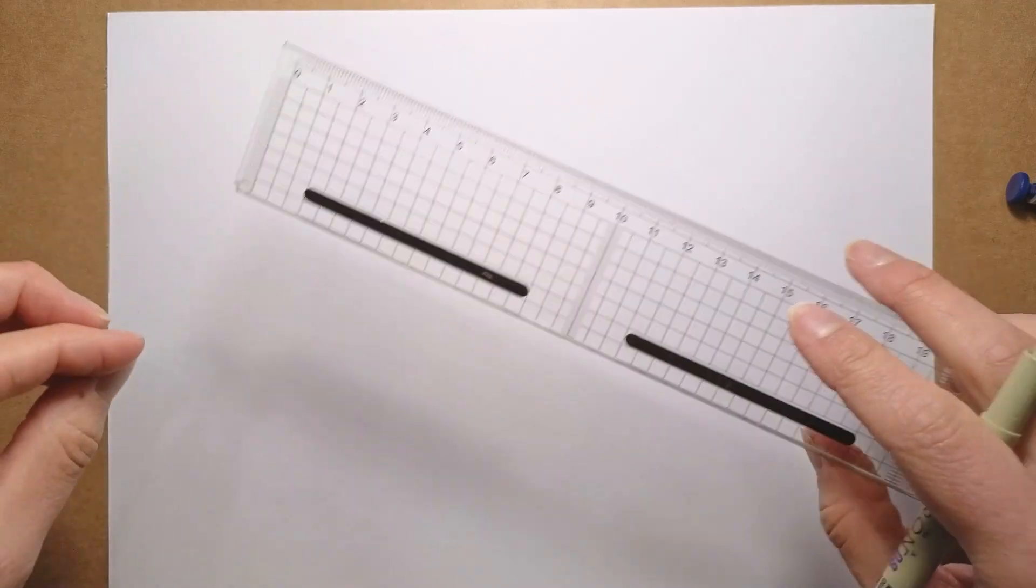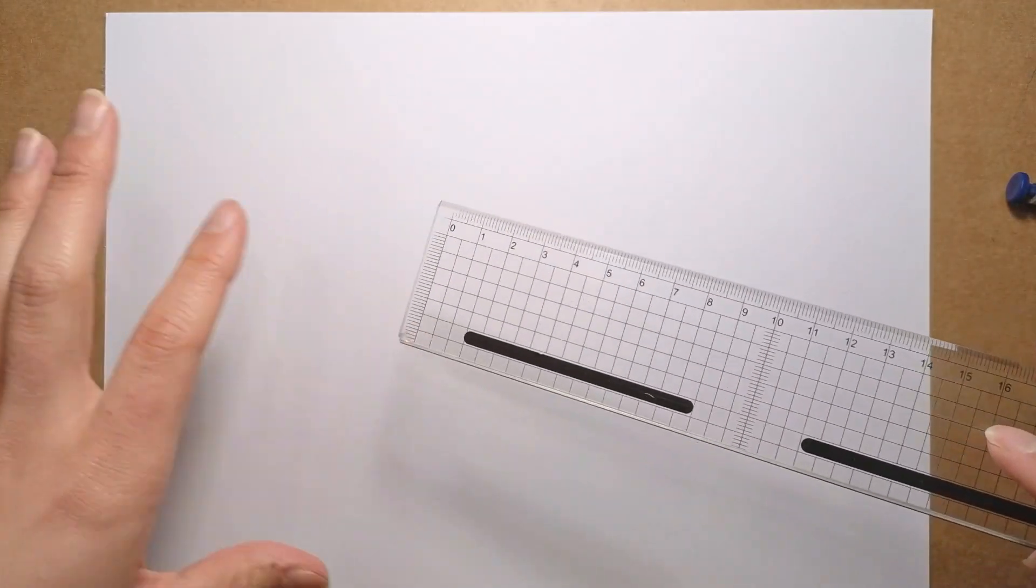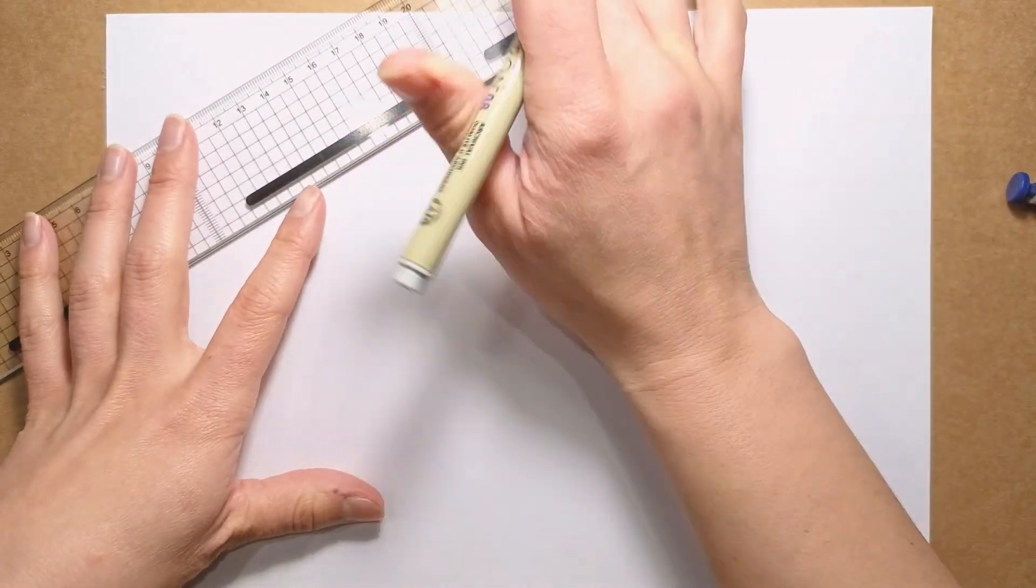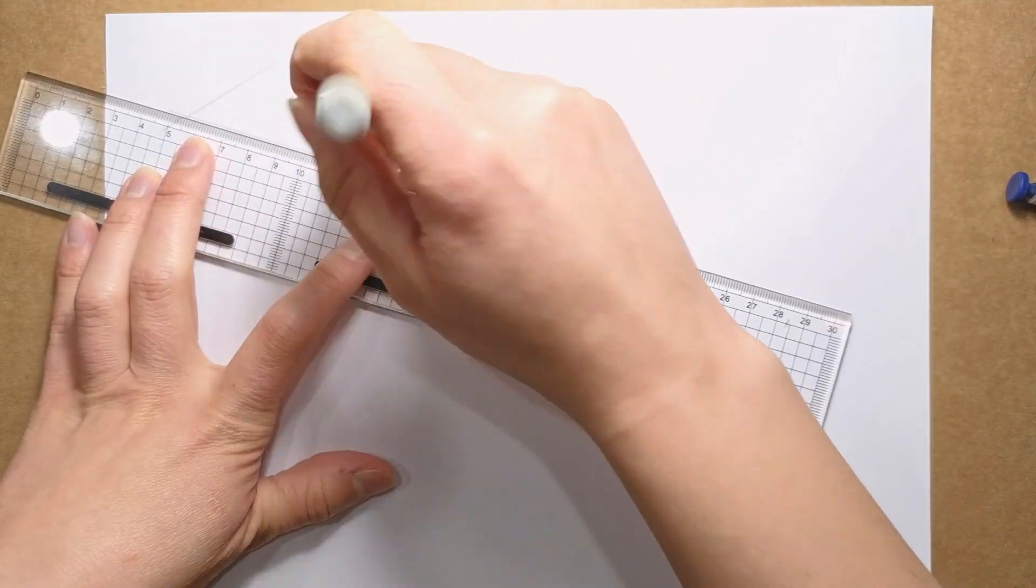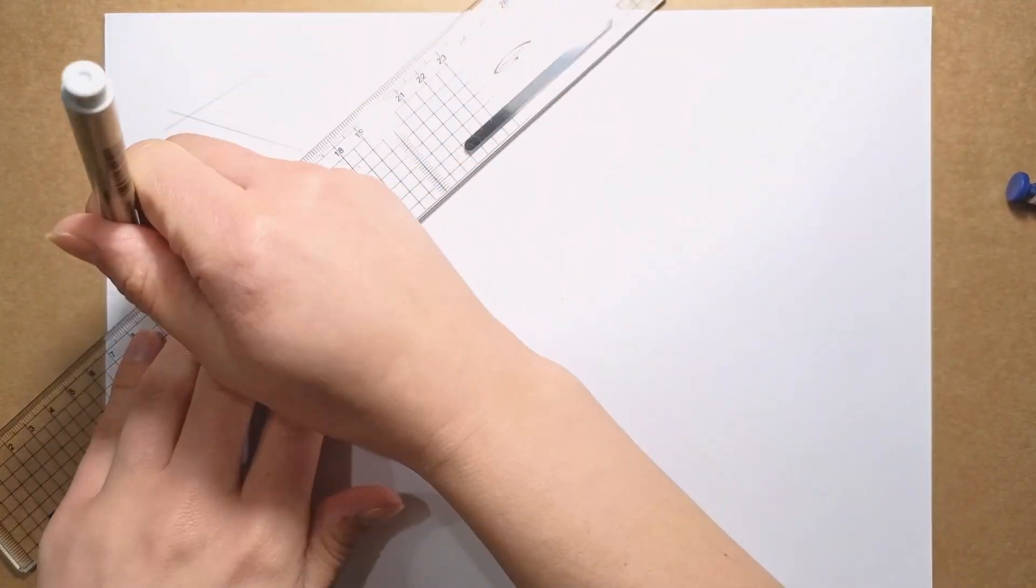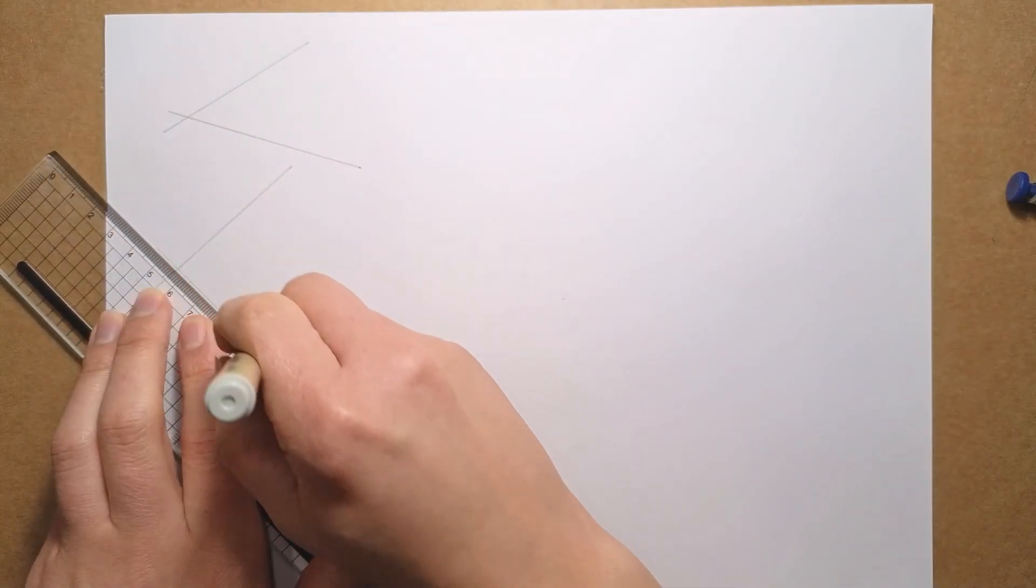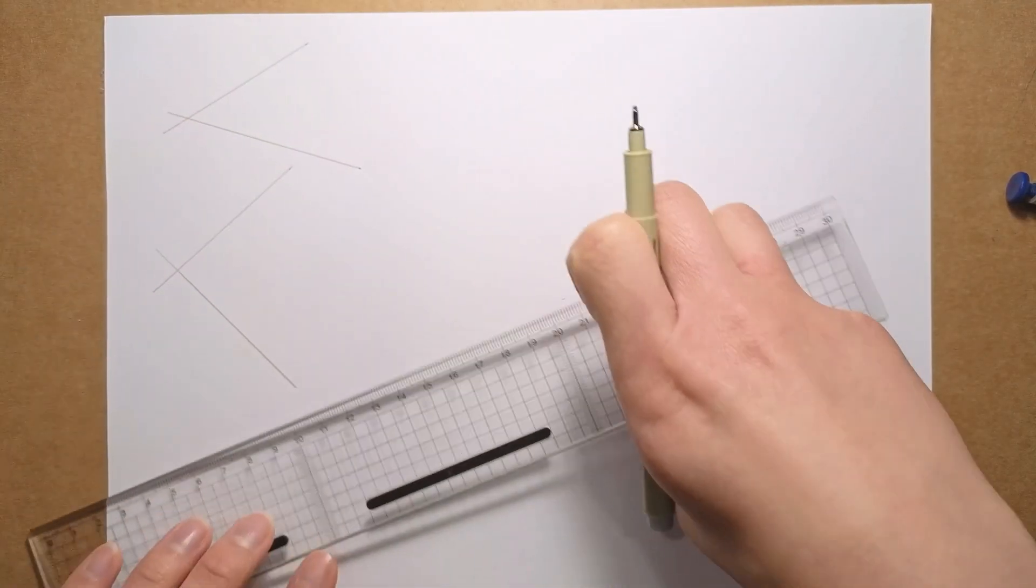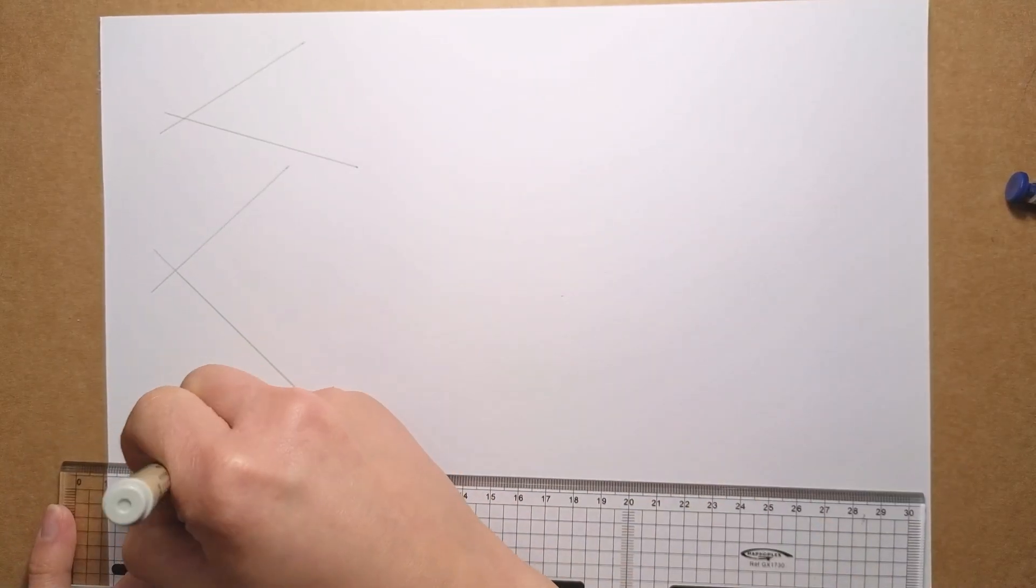To understand how to bisect an angle and how that helps us with divisions of the circle, we're going to start with some random angle examples. I'm going to draw four random angles just to practice. You can try and vary the sort of shape of the angle, like a more acute or more obtuse angle, to see how it works with different types.